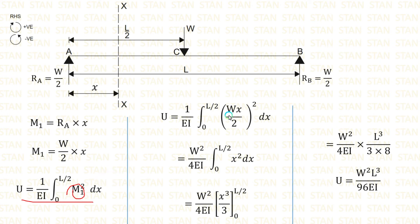We can take the constants outside. W by 2 is the constant. W by 2 the whole square is equal to W square by 4. Now, let us make the integration. For X square, the integration is X power 3 by 3. After that, we can apply the limits.